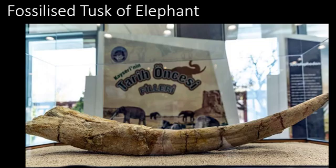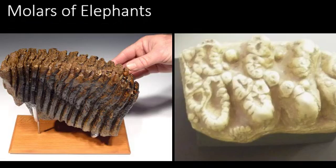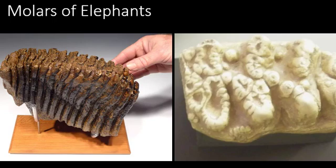The cracks on this fossil show that it was not found in a single piece; it was repaired by the paleontologist. Among all mammals, elephants have the largest teeth. They are lophodont, meaning their teeth have crowns which are fused together to form ridges. They are herbivores and feed on green grassy and leafy materials.